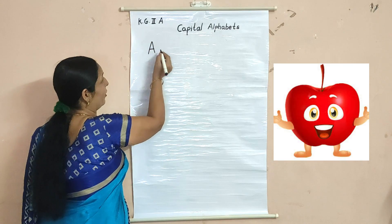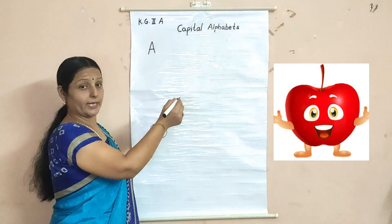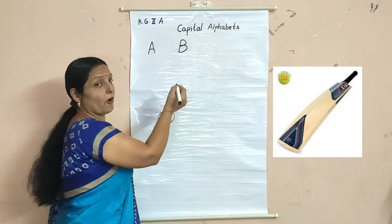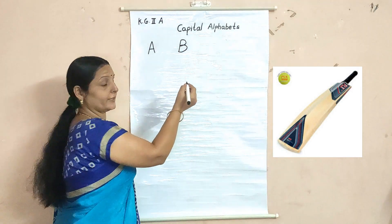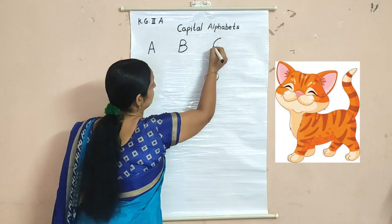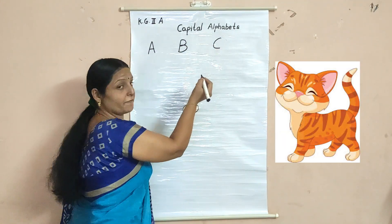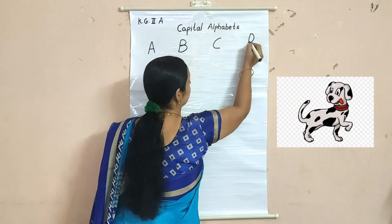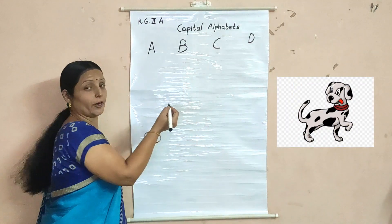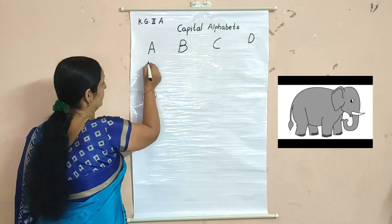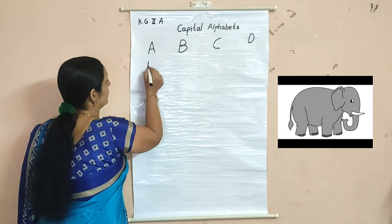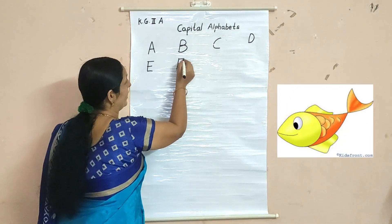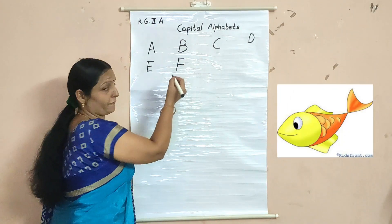A for apple, B for bat, C for cat, D for dog, E for elephant, F for fish.